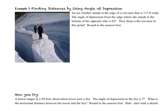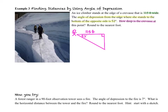Example 3 reads: an ice climber stands at the edge of a crevasse that is 115 feet wide. The angle of depression from the edge where she stands to the bottom of the opposite side is 52 degrees. How deep is the crevasse at this point? Round to the nearest foot. Here's our right triangle with our climber. We know that it's 115 feet wide and the angle of depression is 52 degrees. When we want to find how deep it is, we're finding the opposite side, opposite the 52-degree angle.